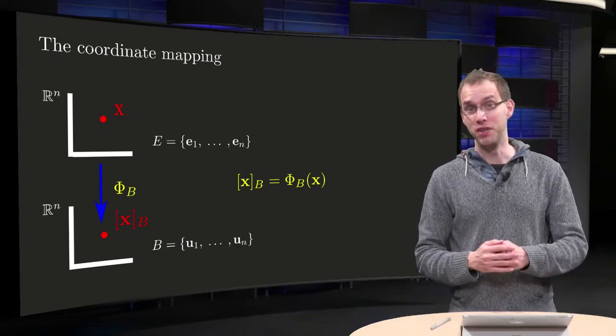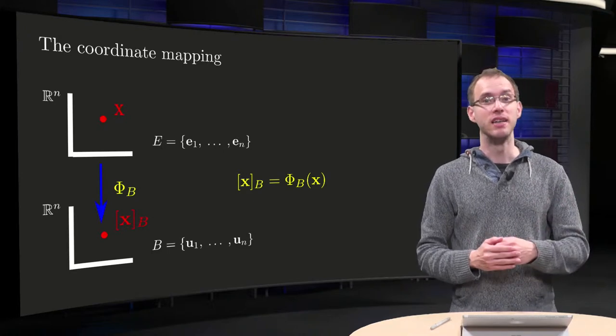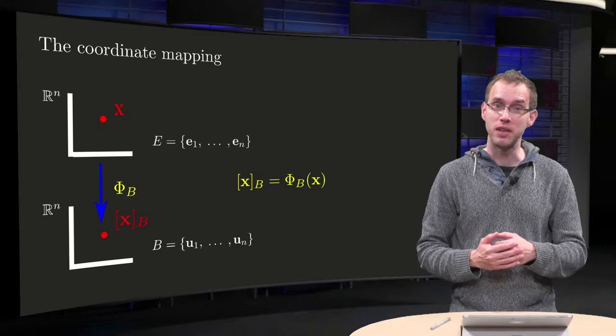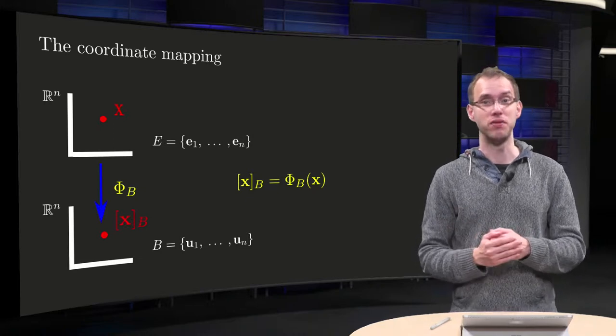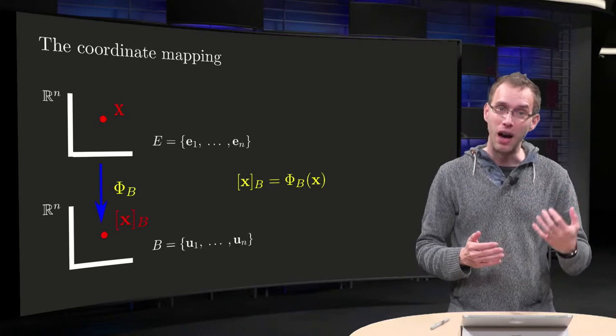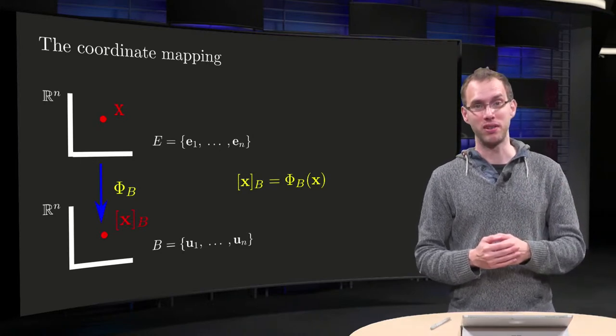If you have a vector space V with the basis B, then every vector in your space can be expressed in terms of your basis vectors using its coordinate vector. But how can you find this coordinate vector?